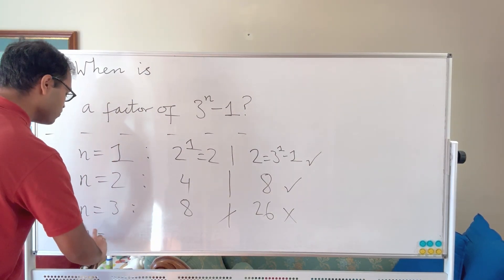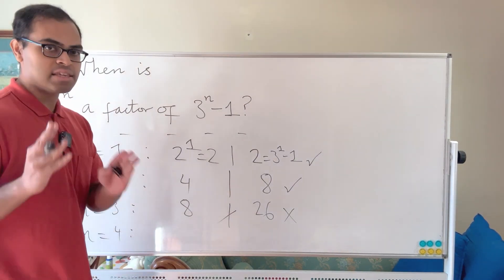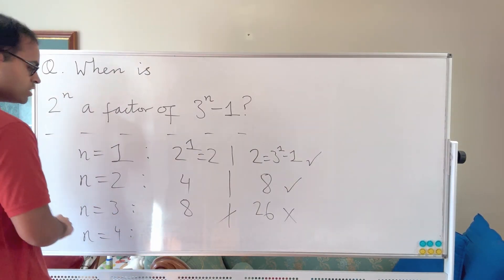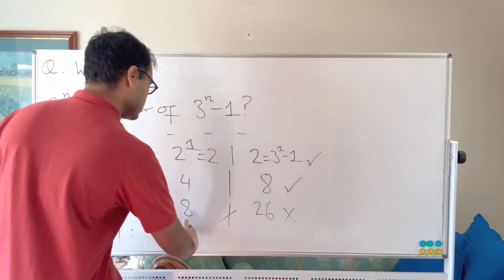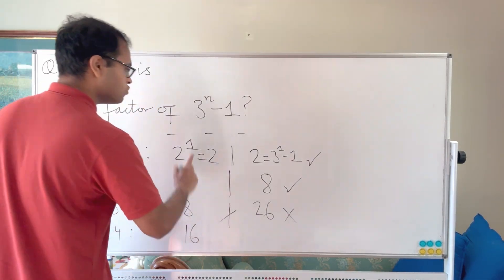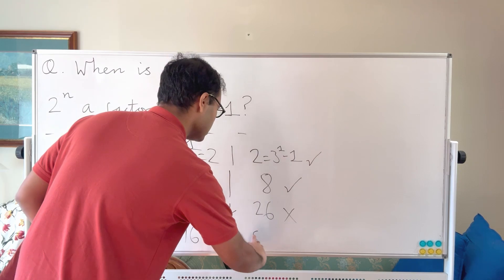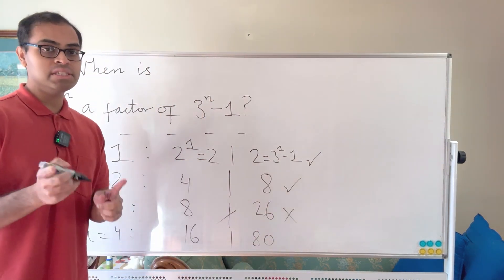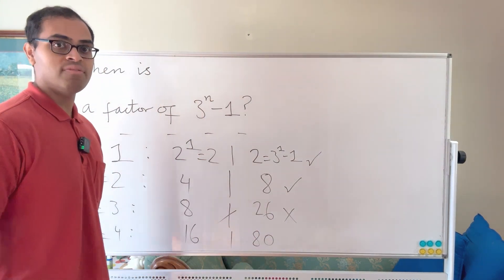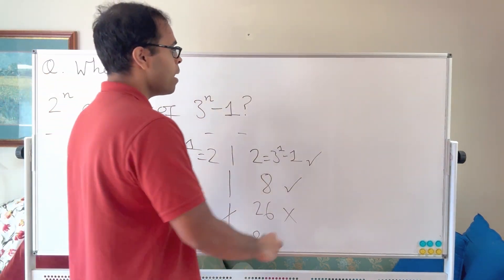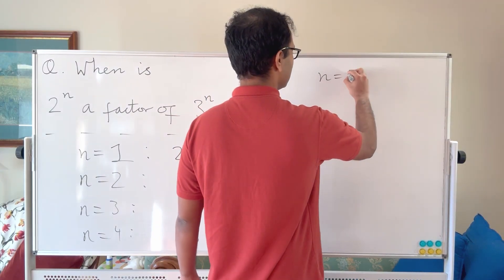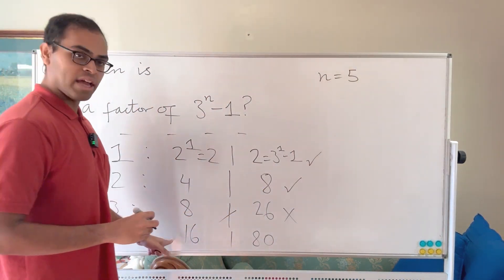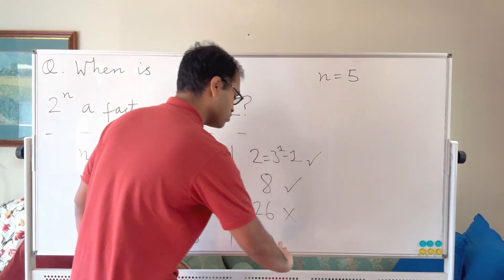For n equals 4, we get 2^4 which is 16, and 3^4 minus 1 which is 80. Remarkably, 16 is a factor of 80 because 16 times 5 is 80. So n equals 2 and n equals 4 both work.